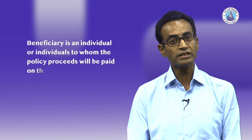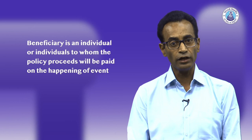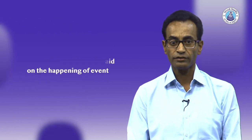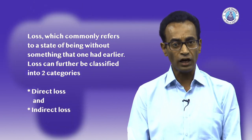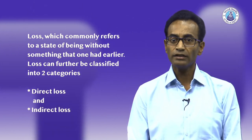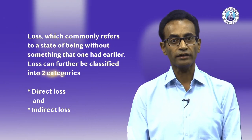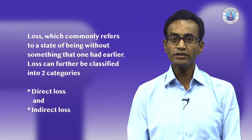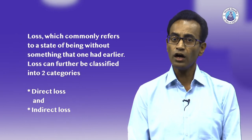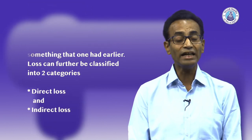Another term is 'beneficiary' — an individual or individuals to whom the policy proceeds will be paid on the happening of the event. The next term is 'loss', which commonly refers to a state of being without something that one had earlier. Loss can further be classified into two categories: direct loss and indirect loss. For example, fire destroying a house is a direct loss for the owner, whereas expenses incurred on living in another house is an indirect loss.